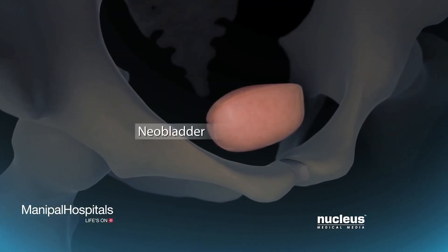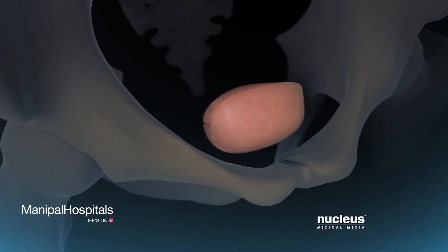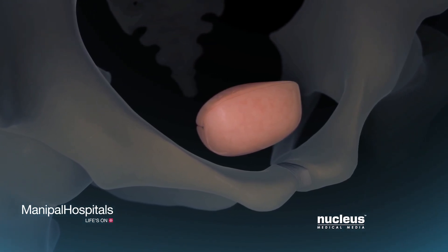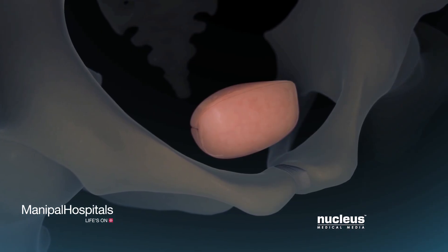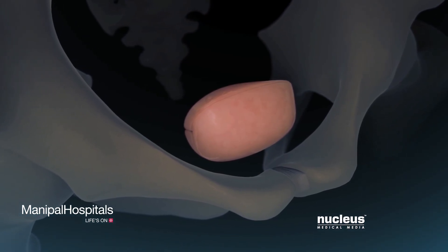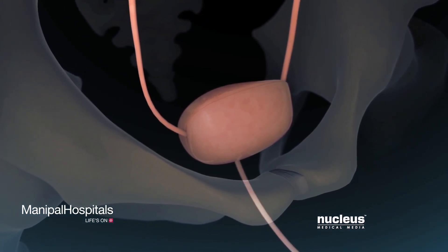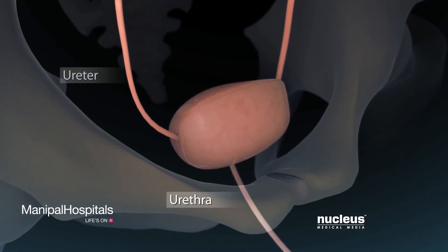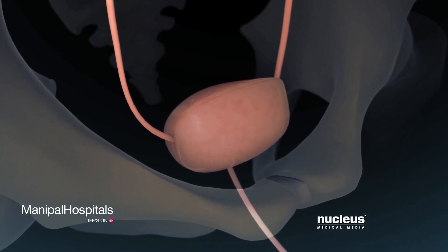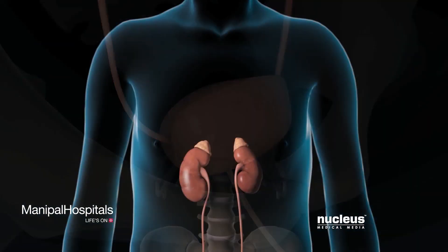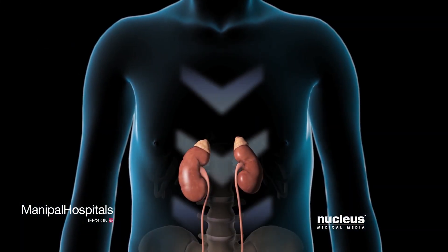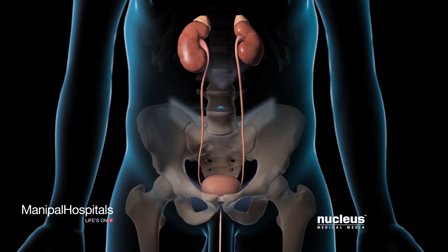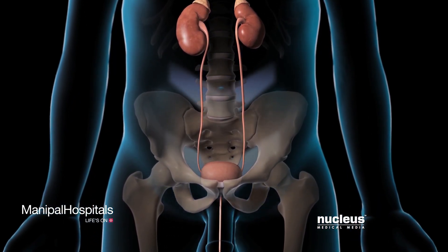If you receive a neobladder or bladder substitute, your surgeon will make a reservoir from a section of your intestine and place it where your bladder used to be. Your surgeon will connect the top of this new bladder to your ureters and the bottom to your urethra. You will urinate by contracting your abdominal muscles, which will create pressure on your neobladder so it will empty.